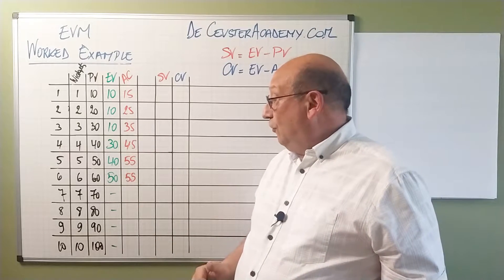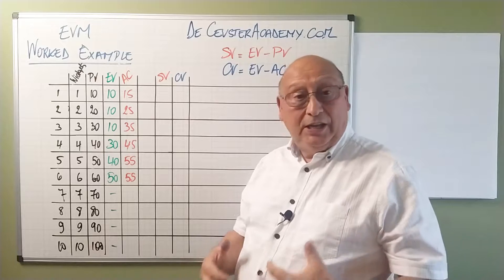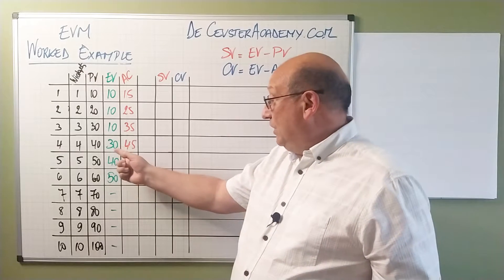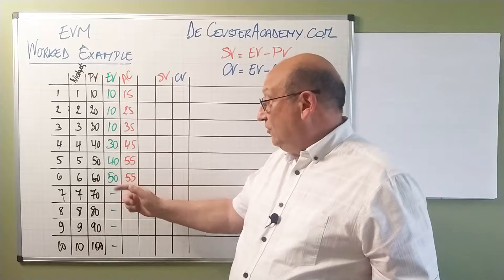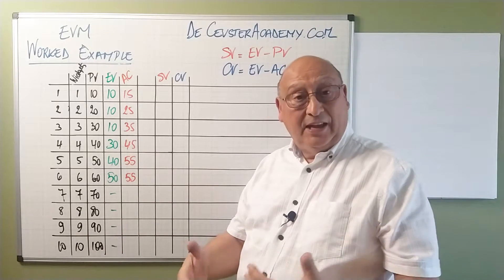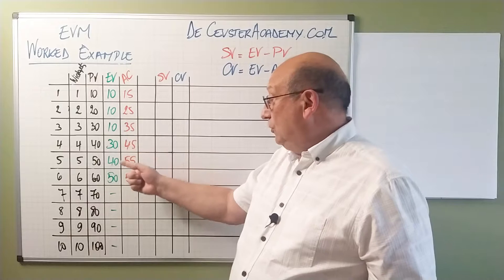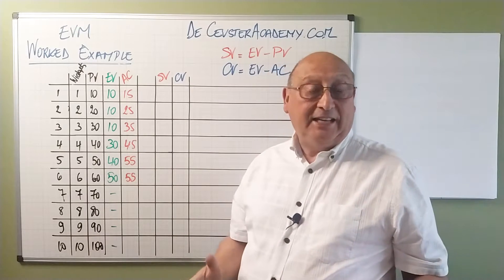Then in period four, great, we made two extras so we have 30k. In period five and six we are producing again as planned so we have 30, 40, and 50k that we earned.